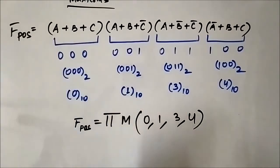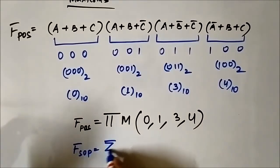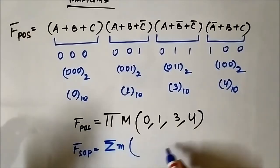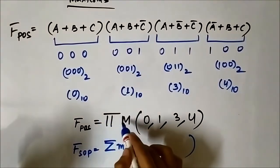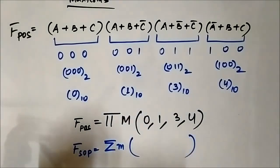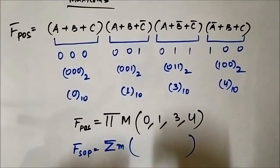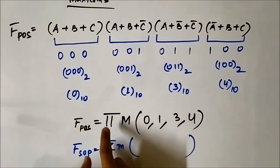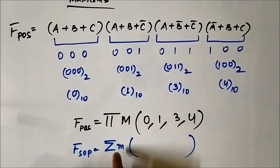In SOP, we used to write it using the summation symbol, small m, and whatever terms are present. But here in POS, it is pi followed by capital M and then the max term decimal equivalents. Always pay attention to whether a Boolean expression is represented in SOP or POS. To identify POS, check for the pi symbol and capital M. For SOP, check for the summation symbol and small m.